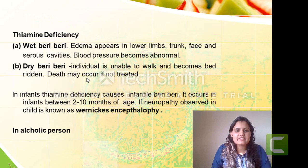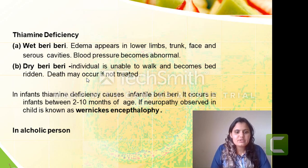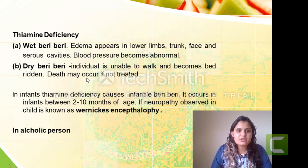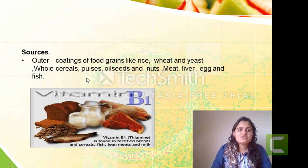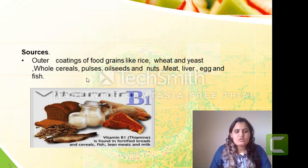In wet beriberi, there will be involvement of the cardiovascular system and edema appearing in the lower limb, trunk, face, and other body cavities, leading to abnormal blood pressure and weakening of the heart. In dry beriberi, it will lead to neuropathy and a person can become bedridden and if not treated, it may lead to death. If deficiency of thiamine occurs in children or in a chronic alcoholic person, that condition is known as Wernicke's encephalopathy. Rich sources for vitamin B1 or thiamine are the outer covering of food grains like rice, wheat and yeast, as well as whole cereals, pulses, oilseeds, and nuts.